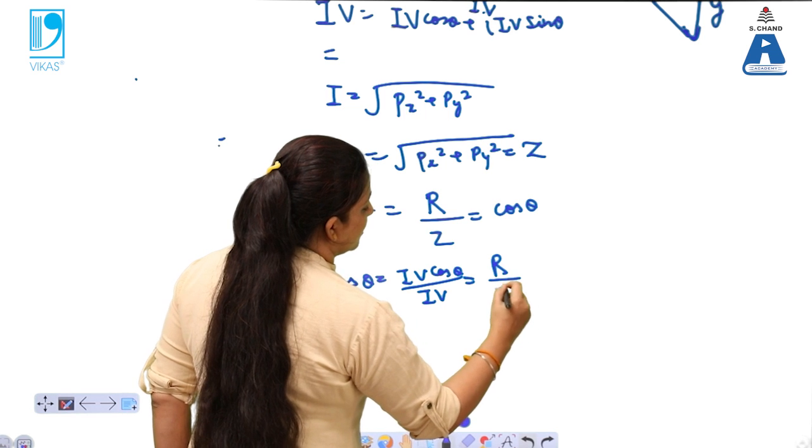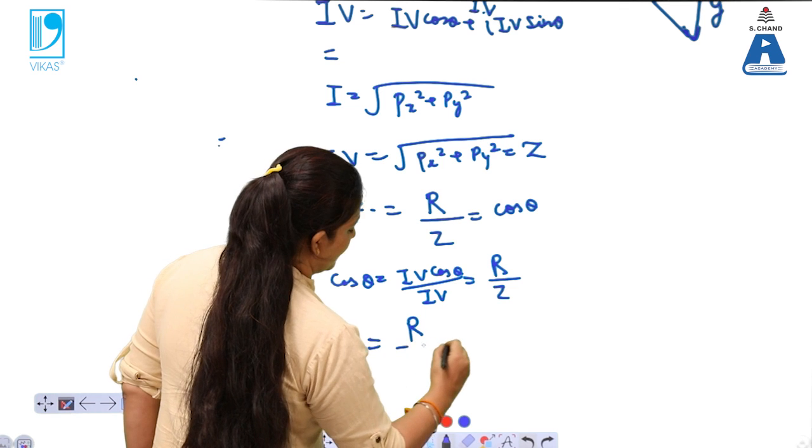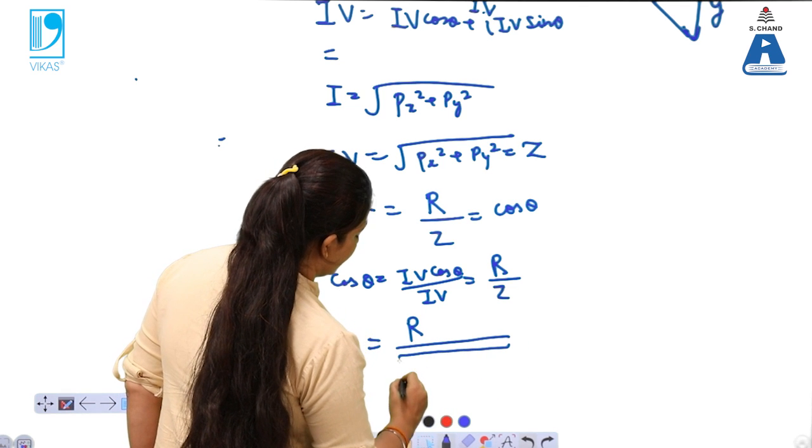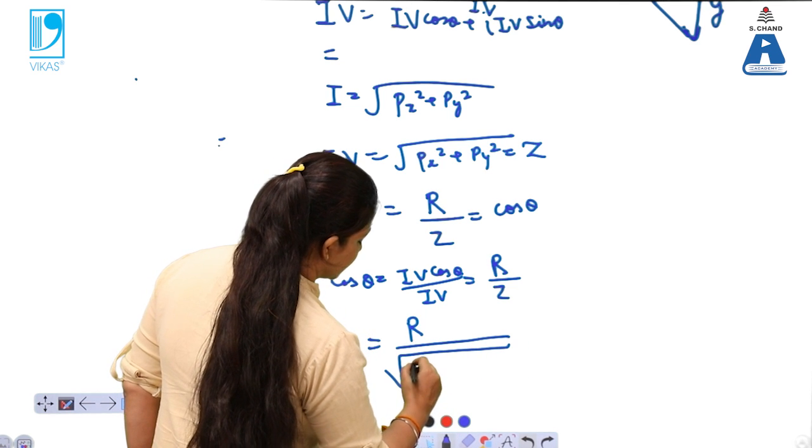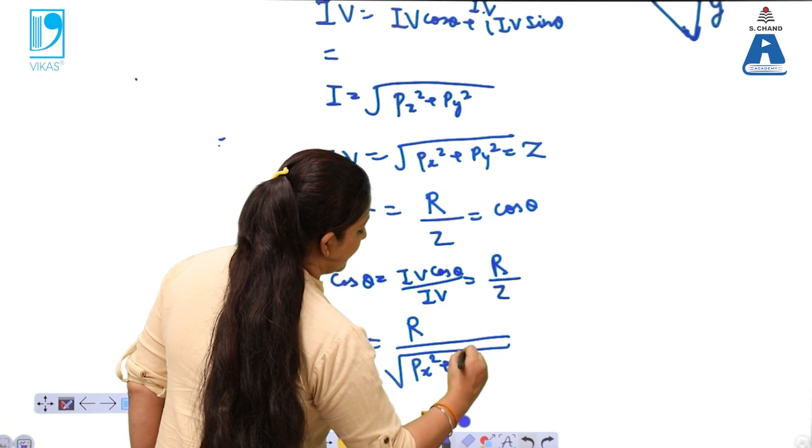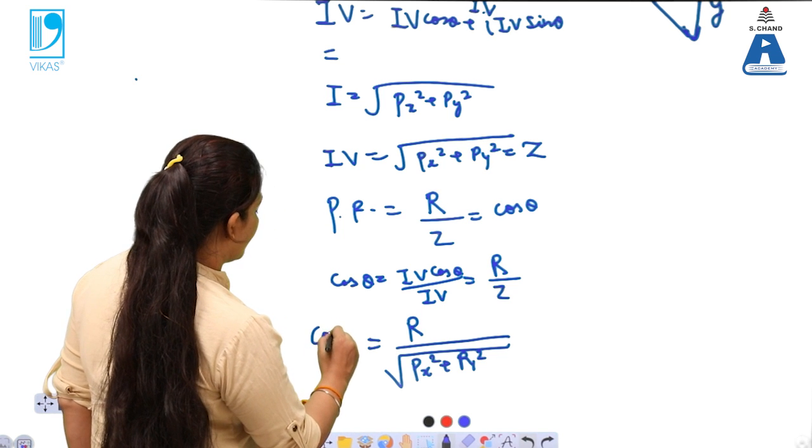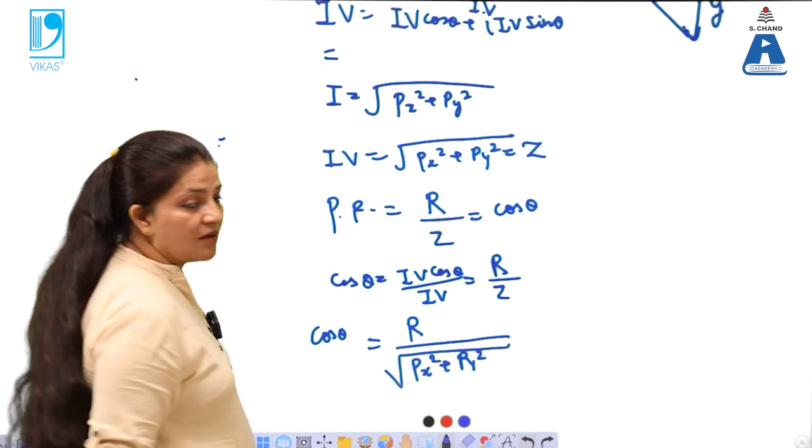What is R by Z? Z is the resultant. So that can be written as R by resultant which is equals to X component, the Px component, divided by the resultant. So by using this relation the power factor can be calculated.